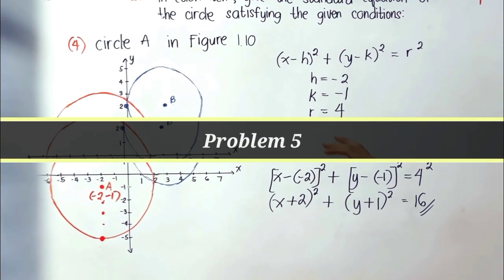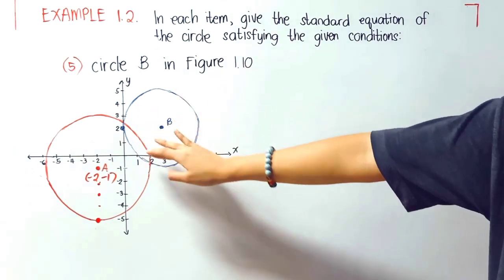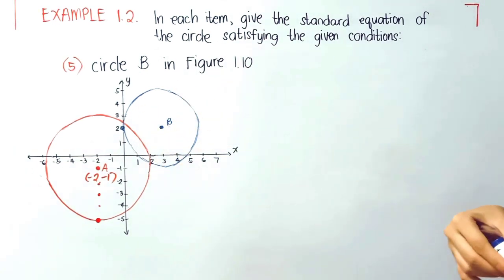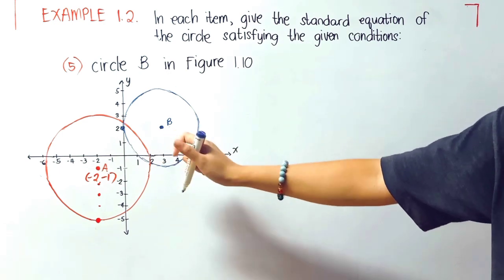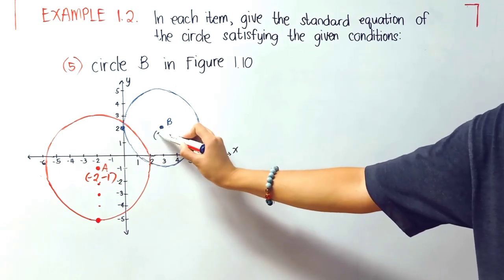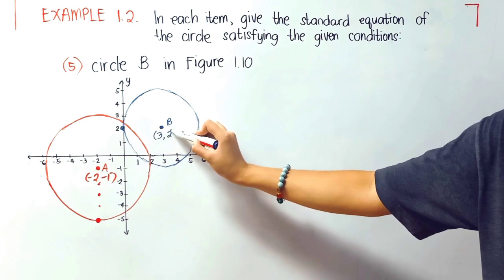Let us now proceed to problem 5. This time, we'll be considering circle B. As you can see, the center is in 3, 2.